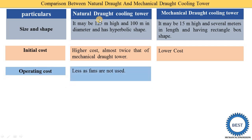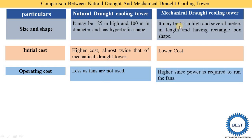The third difference is the operating cost — the cost required to operate the system. In a natural draft cooling tower, operating cost is less as fans are not used; we only need one pump to circulate the water from the condenser. In a mechanical draft cooling tower, operating cost is higher because power is required to run the fan, whether it is induced draft or forced draft, and electricity must be supplied to the fan.